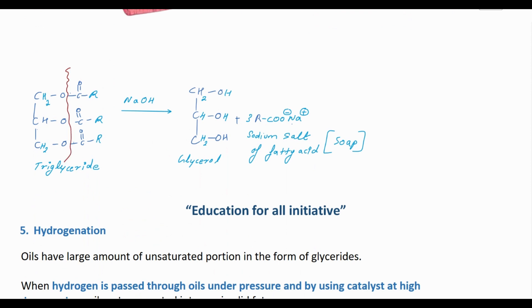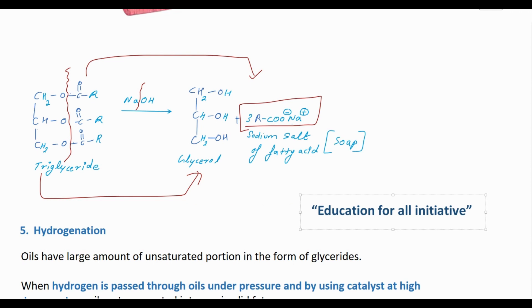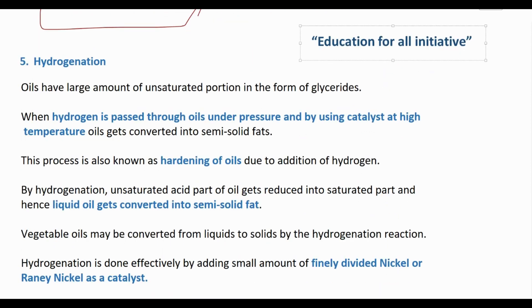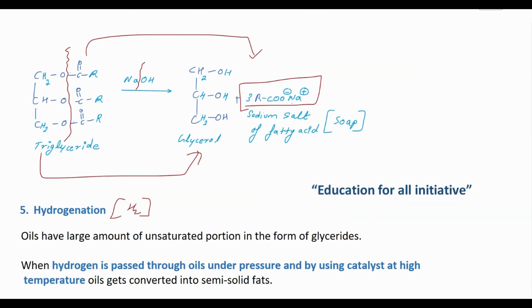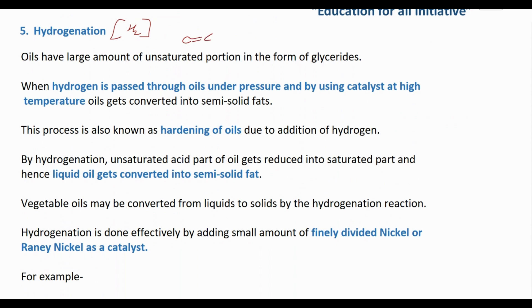In the presence of sodium hydroxide, you will get the sodium salt of fatty acids and you will get the glycerol part. This is alkaline hydrolysis. Next is hydrogenation. Hydrogenation is the addition of hydrogen to the C=C double bond of the fatty acid, and you get the saturated form.